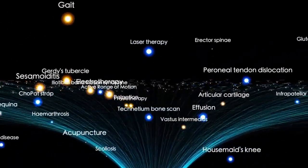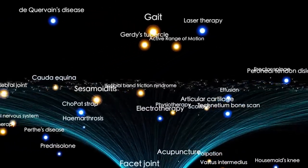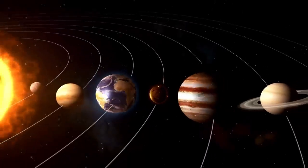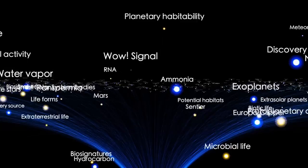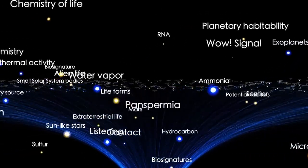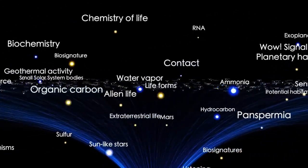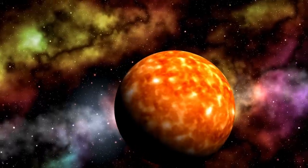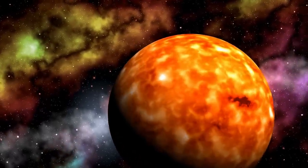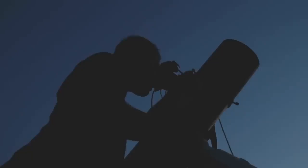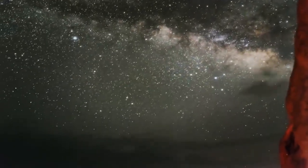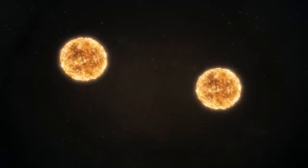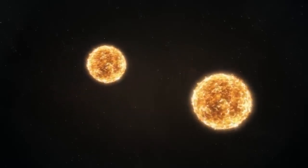Here's the thing: when we observe stars, we're not actually seeing them as they are in the present moment. The light we see from stars like Betelgeuse takes time to travel to Earth. Betelgeuse, one of the most fascinating stars in our night sky, is located approximately 725 light years away from Earth. This means that the light we observe from it today actually began its journey toward us around 725 years ago. In other words, when we look at Betelgeuse through telescopes or even with the naked eye, we are witnessing the star as it was centuries ago, not as it exists in the present moment.